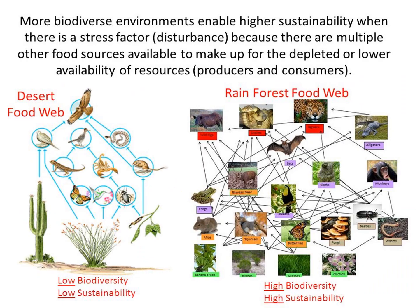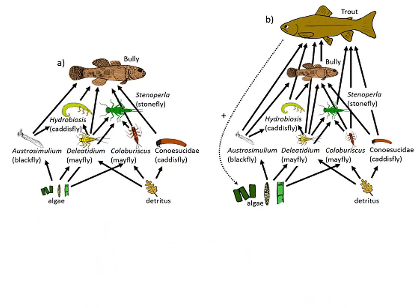Here's an example of what you might see on a test. On the left, we don't have very many organisms — so we've got low biodiversity, which means low sustainability. If something happens, it might not be able to recover. On the right, we have high biodiversity with lots of different organisms — lots of different producers and primary and secondary consumers — which means high sustainability and a better chance that the ecosystem will be able to sustain itself.